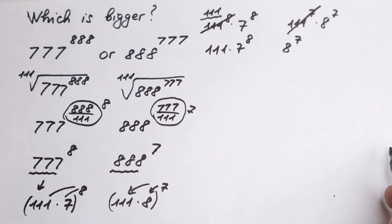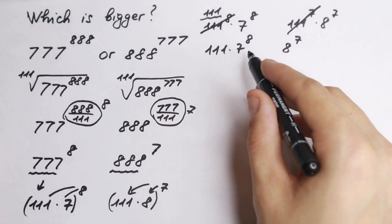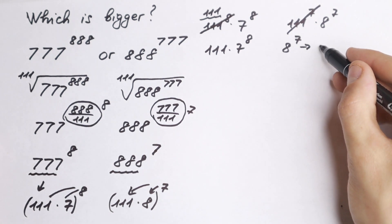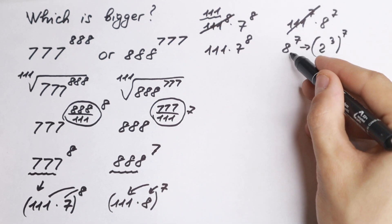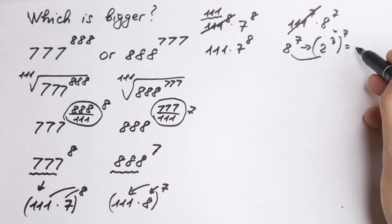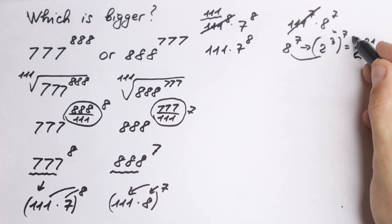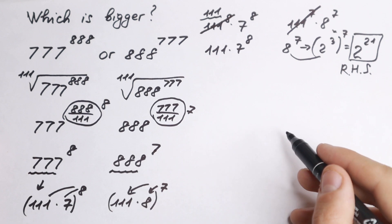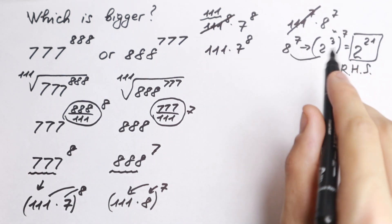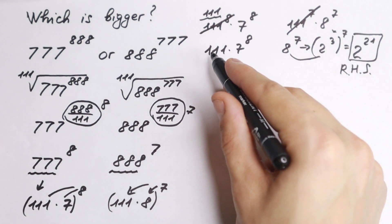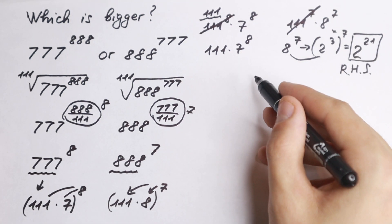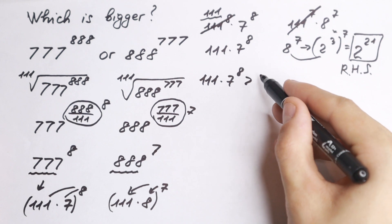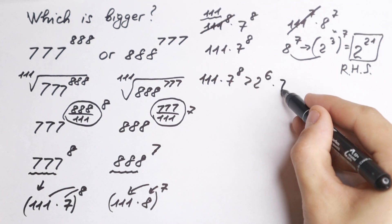We still cannot directly compare these two numbers. But let's rewrite 8 to the 7th: since 8 = 2 cubed, we get (2^3)^7 = 2 to the power 21. So the right hand side is 2^21. On the left we have 111 times 7 to the 8th. Since 7 is a prime number we can't express it as a power of 2 directly, but we can compare it using a chain of inequalities. We note that 111 > 64 = 2^6, so 111 × 7^8 > 2^6 × 7^8.